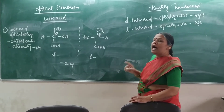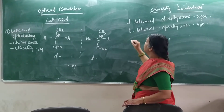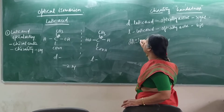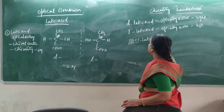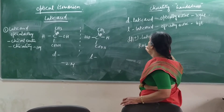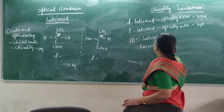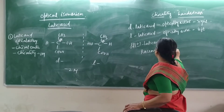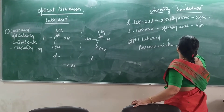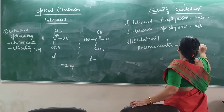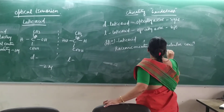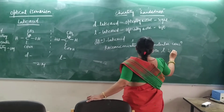Apart from this, you have one more isomer — I am going to call it DL-lactic acid. What is this? This lactic acid we are going to call the racemic mixture. What is a racemic mixture? This is an equimolar concentration of both the L and D isomers.